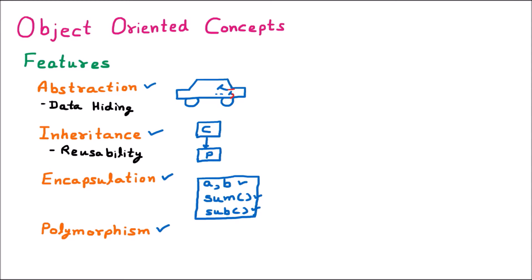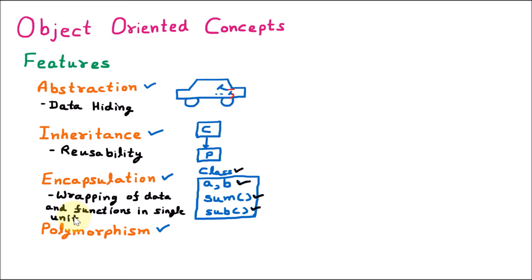The combination of data members and member functions is called a class. So the class concept is taken from encapsulation. Wrapping up of data and functions into a single unit — where the single unit is the class — that is encapsulation. So the concept of class is derived from encapsulation.